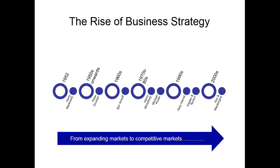Moving into the 1960s, the world was still experiencing strong financial growth driven by the Marshall Plan launched in 1945, which funded the development of many organisations. At that time, the most important capability for a business to be successful was the ability to plan — your development, logistics, supply chain, markets, and routes to markets. The work of Igor Ansoff was very much based around using mid-range planning to help expansion.